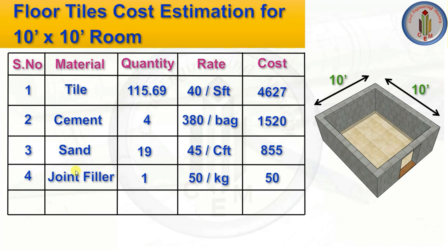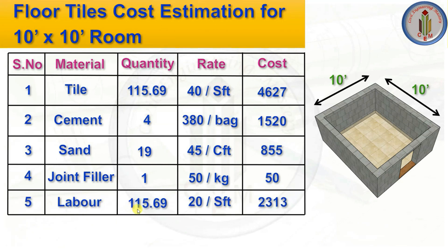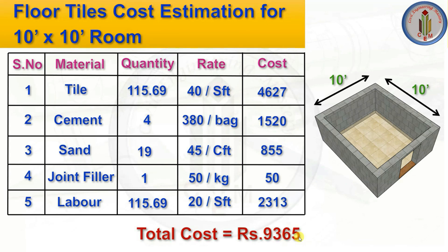Joint filler — the material used between tiles — approximately 1 kg at 50 rupees/kg = 50 rupees. Labor cost to lay 115.69 sq ft of floor tiles at 20 rupees/sq ft (range: 15–20 rupees) = 2,313 rupees. Total cost = 9,365 rupees to fix floor tiles including skirting for a 10×10 feet room. Mortar for skirting was not separately considered as wall plastering mortar is already present.